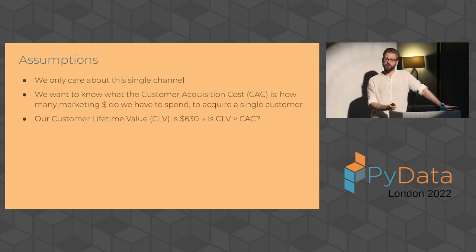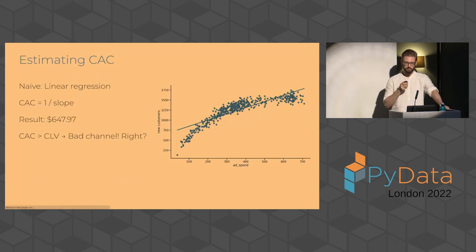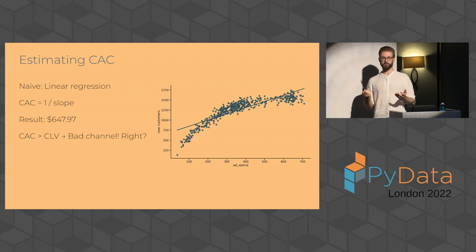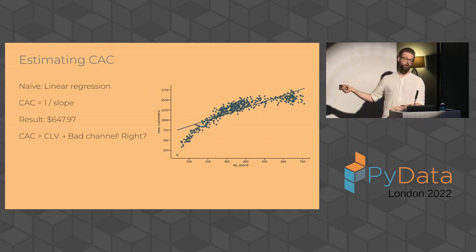And the other thing which we care about, of course, is how much we gain from the user. So how much does it cost me to get one and how much do I earn in terms of the whole lifetime that they're with me, which is the customer lifetime value. And we're going to assume that that is $630 on average. And of course, then the question is, well, do I have to spend more in marketing than I get from that customer? So this is basically that threshold that we want to cross. And if we were very naive about this, you might think, well, actually, this is a super simple problem. So here now I'm just plotting this data differently. So I'm ignoring the time domain and I'm just saying, this is how much I spend on ads and this is how many new customers I got.